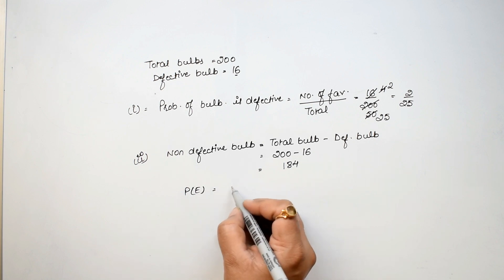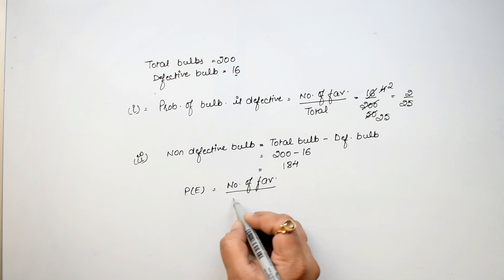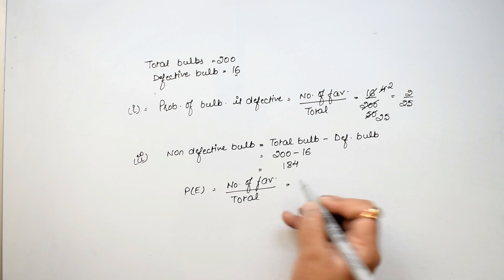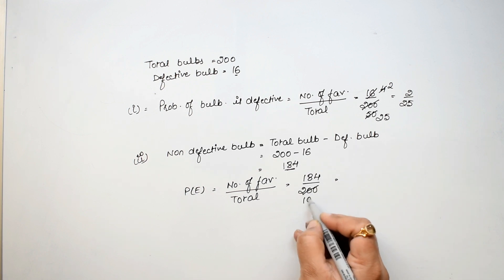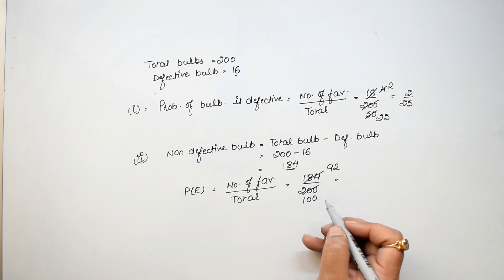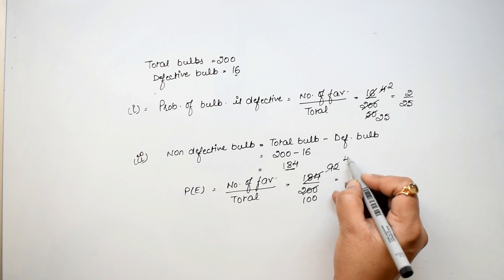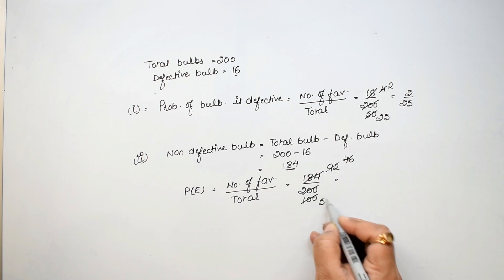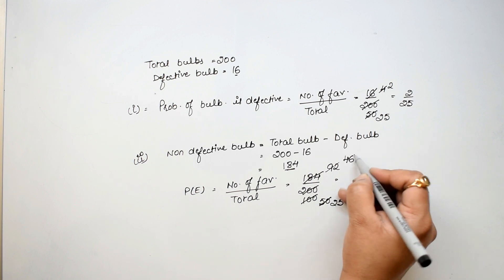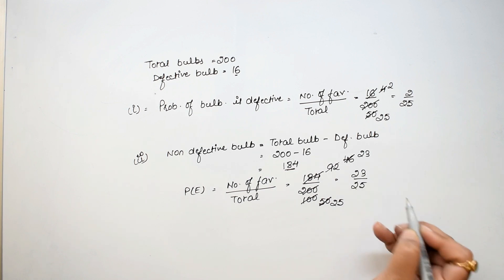Number of favorable divided by total. Non-defective bulbs, 184, and total 200. Reduce it: 2, 1 is 2, 0, 0. 2, 9 is 18, 2, 2 is 4. You can write 0.92 as well, then it will be correct. And you can reduce it further. 2, 4 is 8, 2, 6 is 12, 50. 25, 2 is cancelled. 23 upon 25 is the answer.